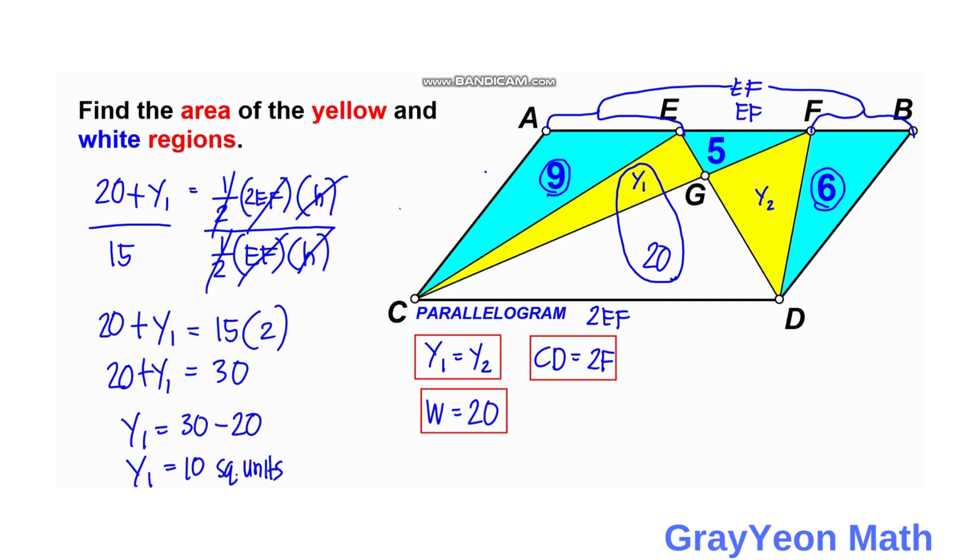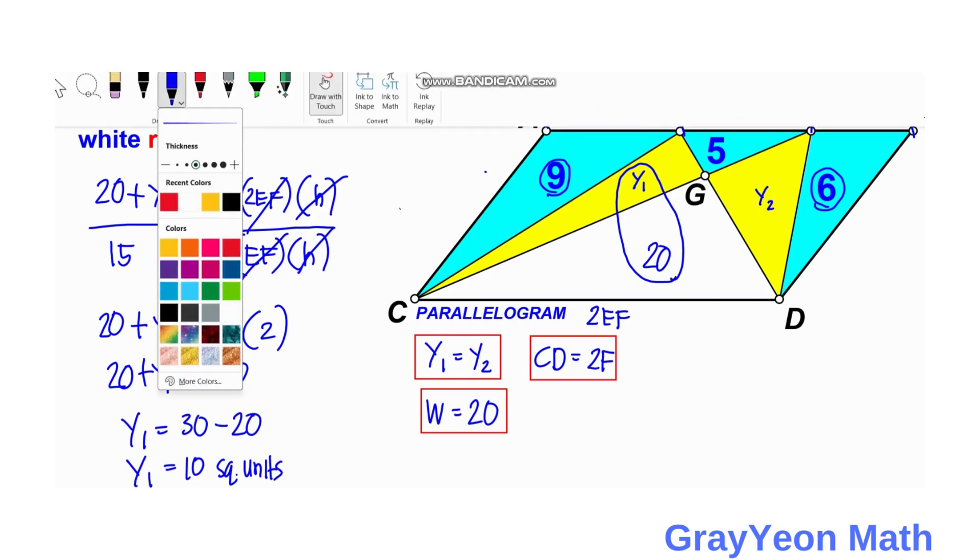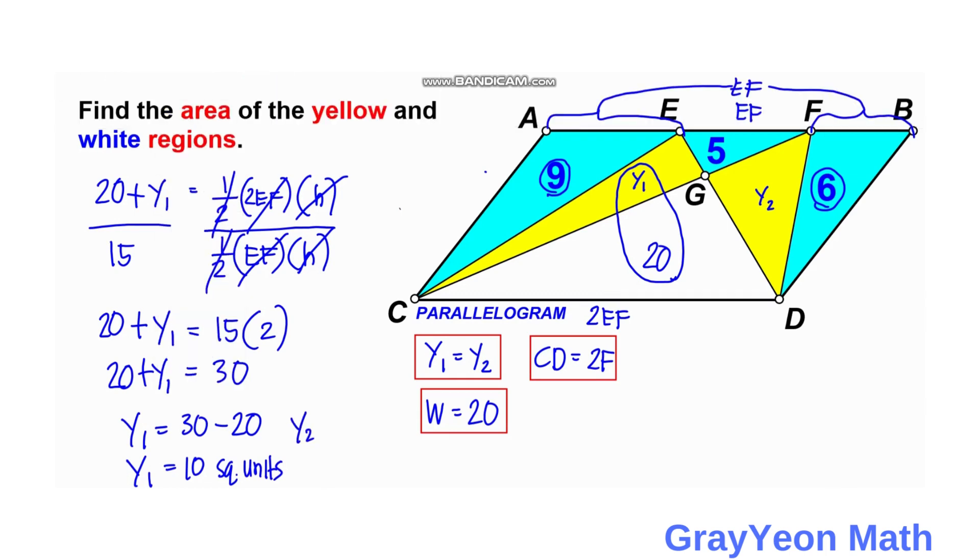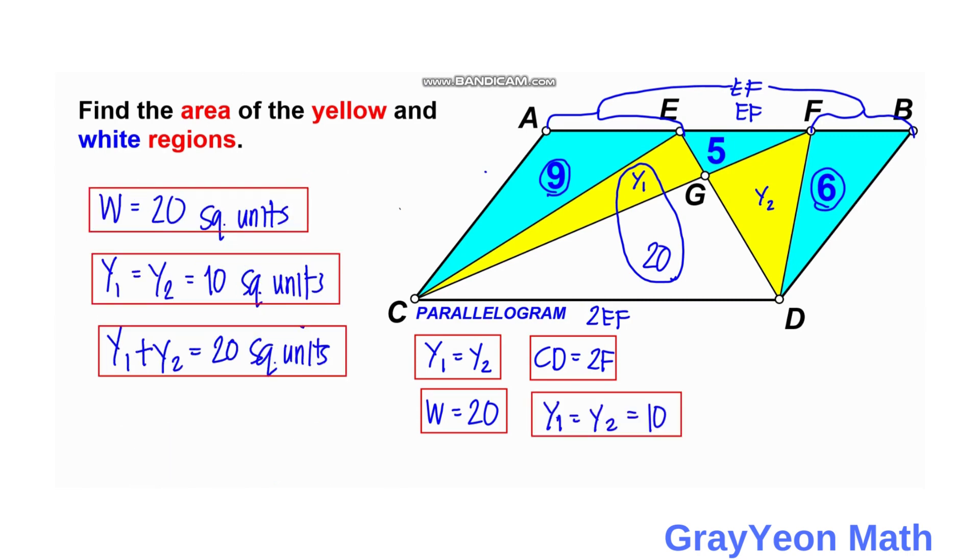And since Y1 equals Y2, we have Y2 is also equal to 10 square units. So summarizing, we have our answers: the white region is 20 square units, and the yellow one and yellow two are equal with area of 10 square units, and the combined area of the yellow one plus yellow two is 20 square units. And that will be our answers.